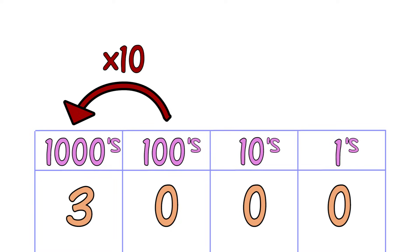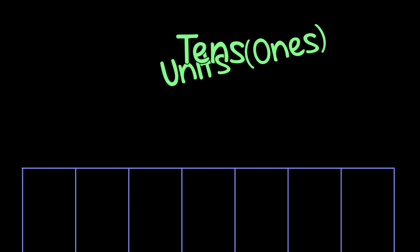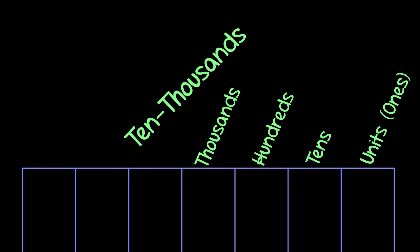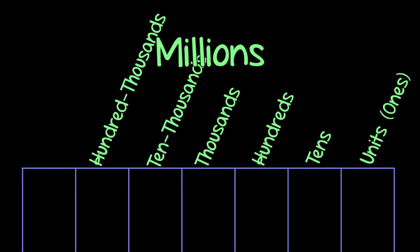These are the names of each column: Units, 10s, 100s, 1000s, 10,000s, 100,000s, millions.